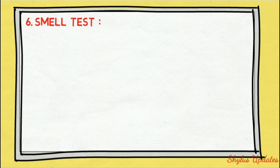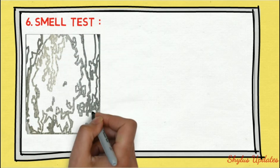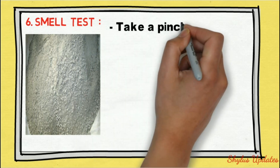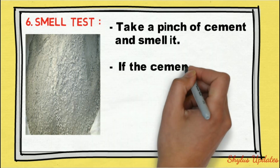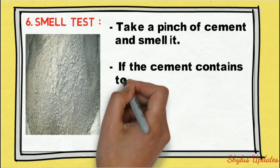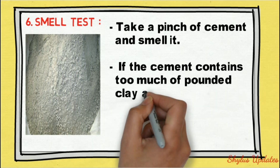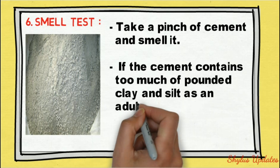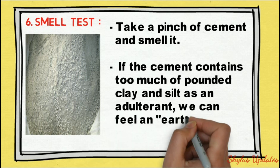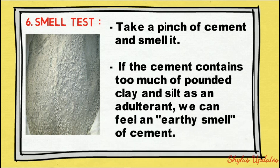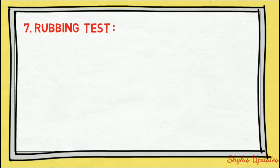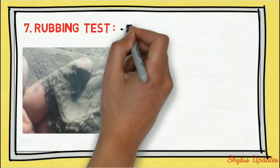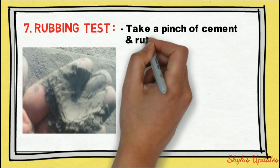Smell test: take a pinch of cement and smell it. If the cement contains too much pounded clay and silt as an adulterant, you can feel an earthy smell from the cement.